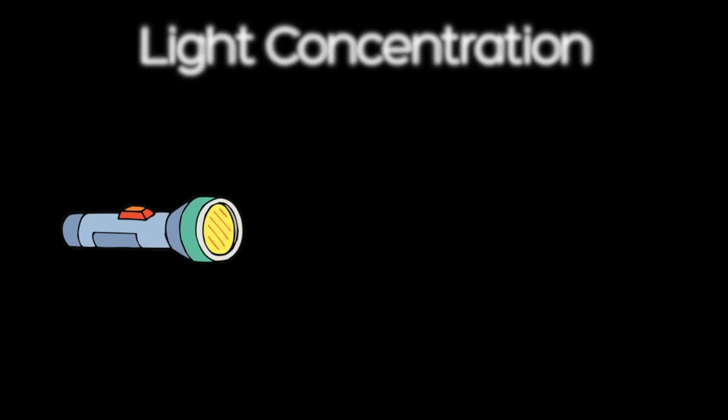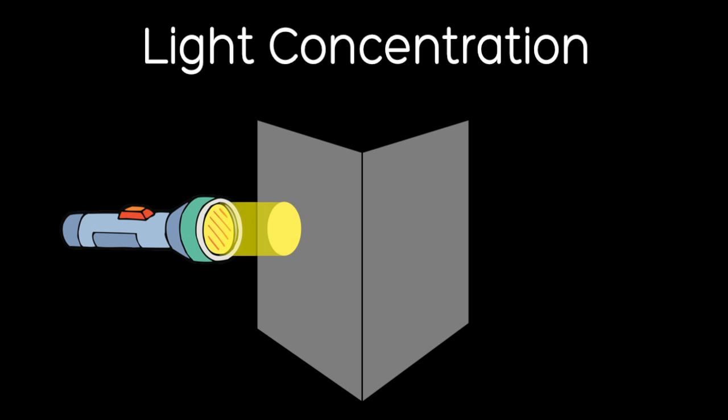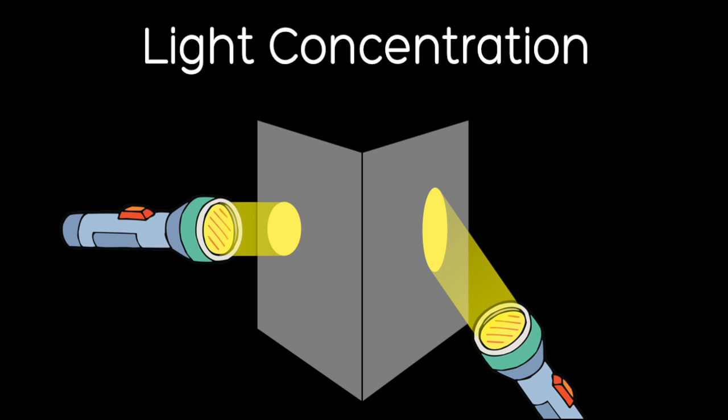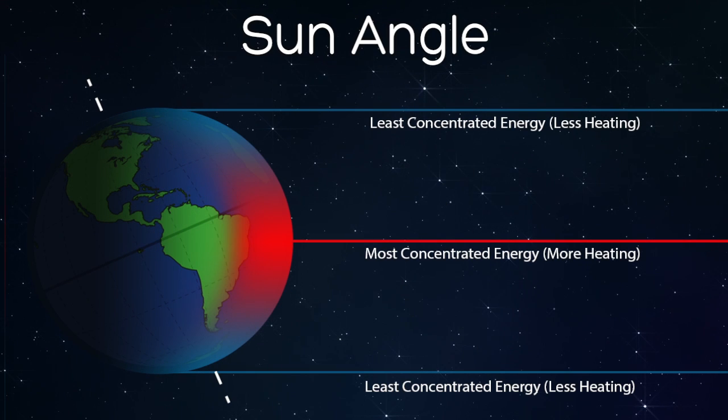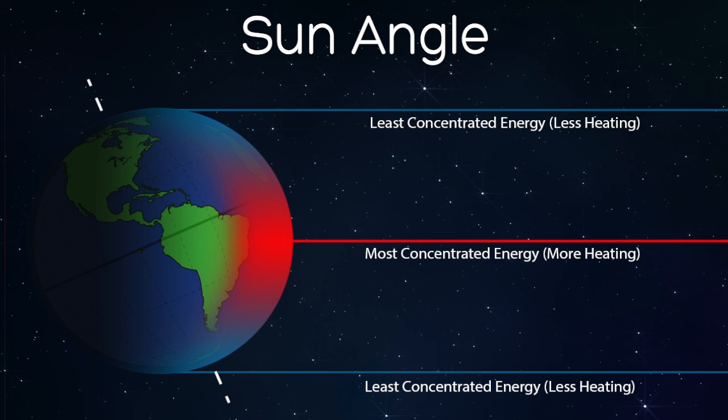Think of a flashlight. If you shine a flashlight at a 90 degree angle to a wall, you get a small circle of light. If you have the flashlight at a smaller angle, the circle of light becomes larger. The amount of light or energy the flashlight is putting out is the same, but the energy is spread out over a wider area. The same thing happens when Sun angle is less than 90 degrees — the energy is spread out over a wider area and won't cause as much heating.